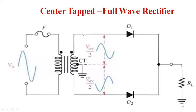The remaining terminals have potentials that vary with respect to this center tap point. This is how the center tap of the transformer is constructed. To both terminals of the transformer's secondary, we connect diodes D1 and D2 in series, and they are connected in series with the load network.